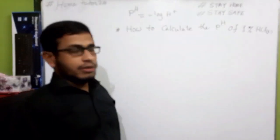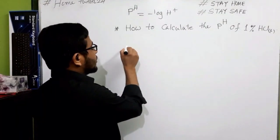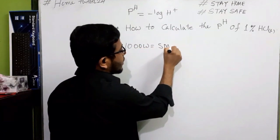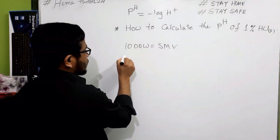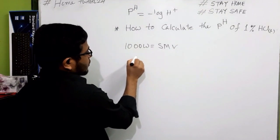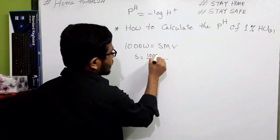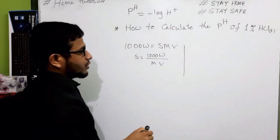There is an easy formula by which we can calculate the molar concentration of HCl. We can write that 1000 w₀ equals S M V. Here, S equals 1000 w₀ divided by M V for a percentage solution.